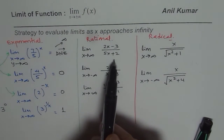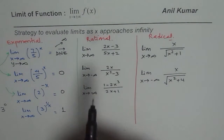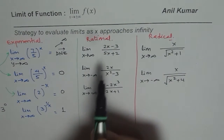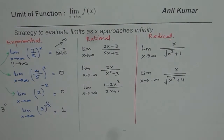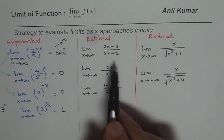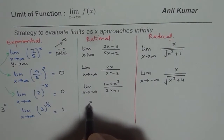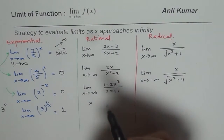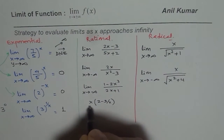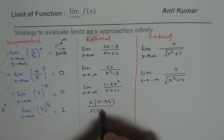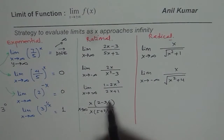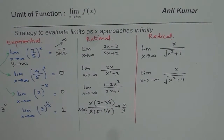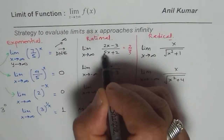Now for rational functions, to find the limit we divide all terms by x. For the first one, factoring out x gives us 2 minus 3 over x in the numerator and 5 plus 2 over x in the denominator. As x approaches infinity, 3 over x and 2 over x both approach 0, and the x's cancel out. So the function approaches 2 over 5 — the ratio of the leading coefficients.